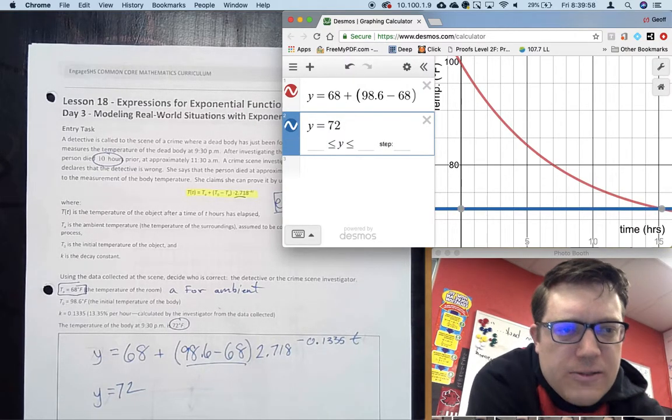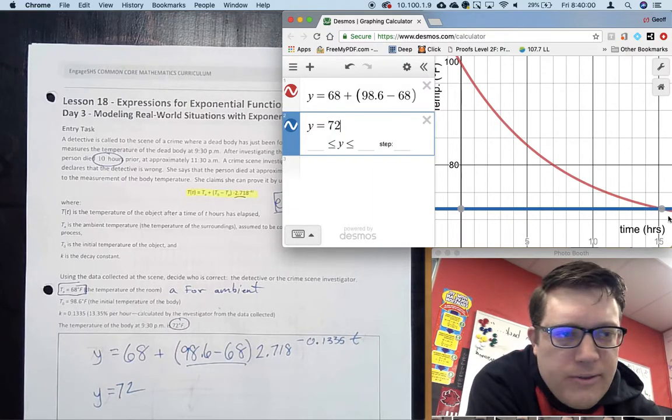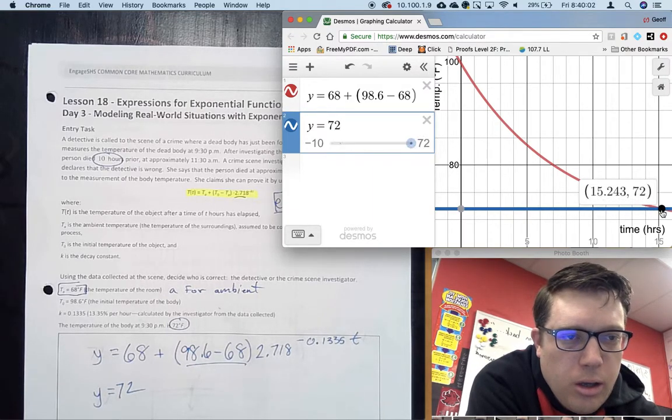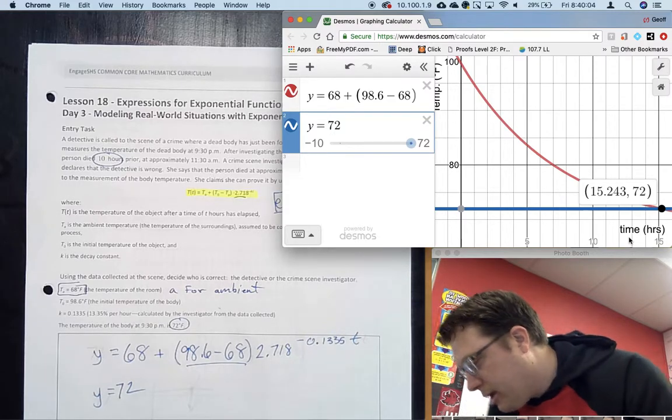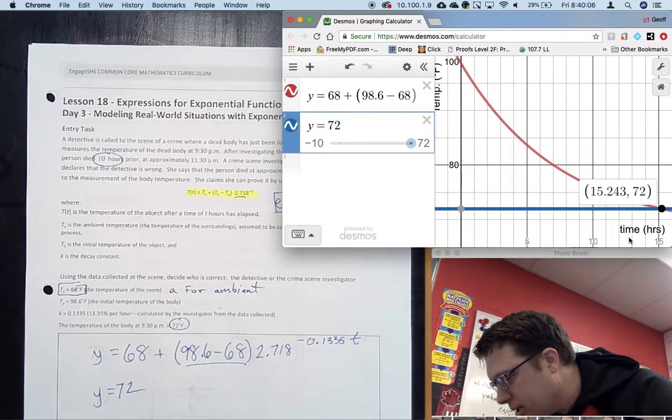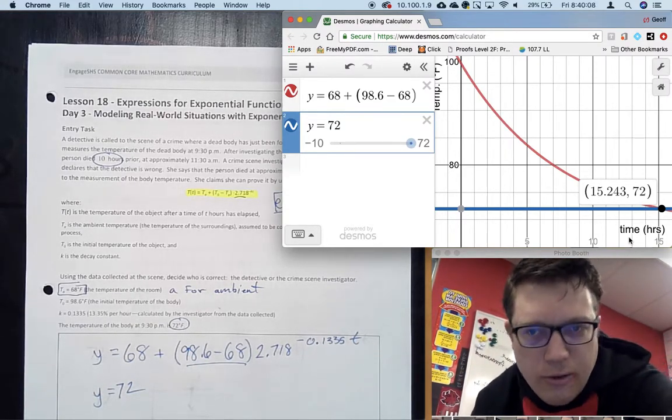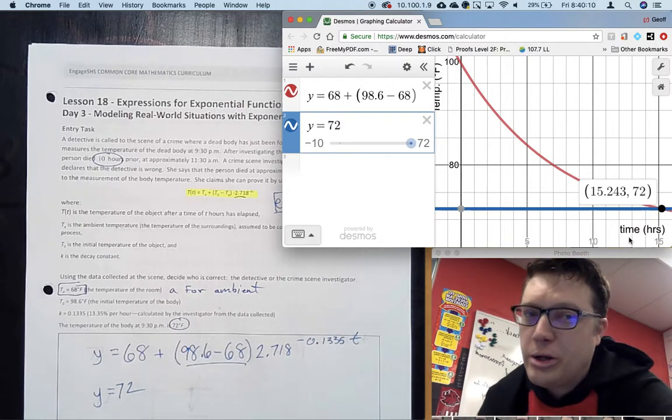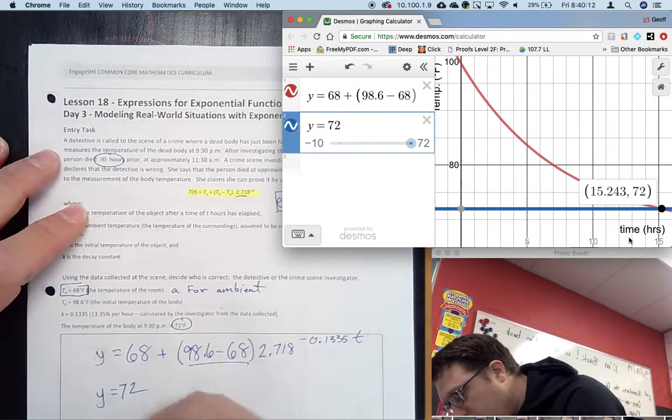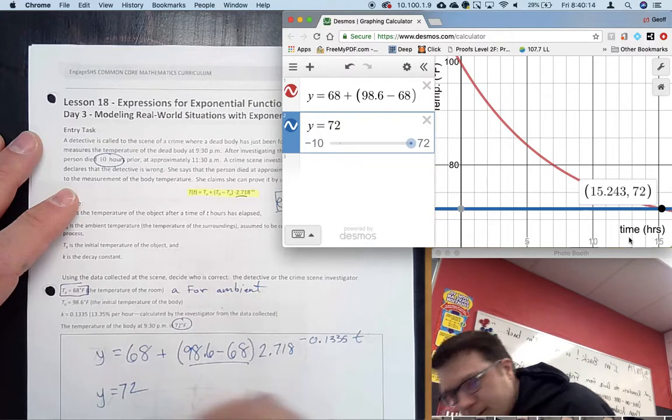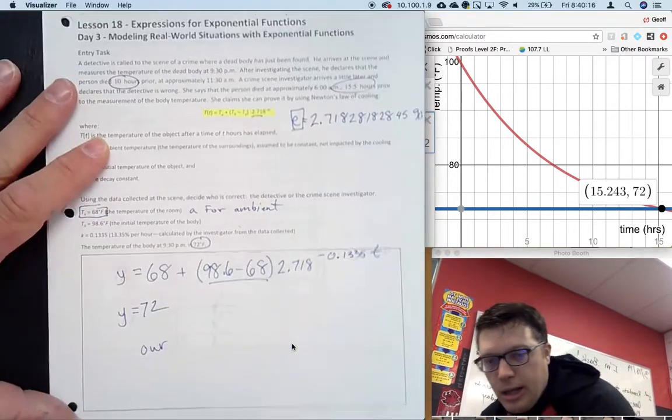What we need to know is when is this curve going to reach 72 degrees, because 72 degrees is the current temperature of the body. So by doing Y equals 72, I create this flat line. And over here, oh my goodness, the forensic investigator went to college for a reason. She knows how to use Newton's Law of Cooling. That detective could learn a thing or two.